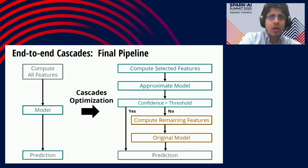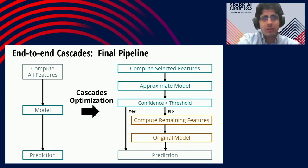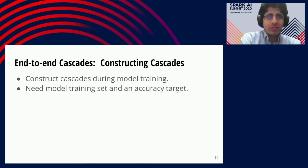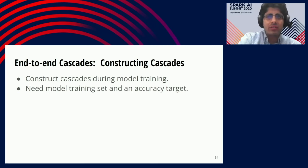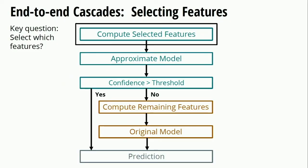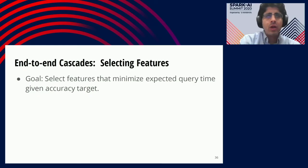Now let me talk about the more interesting and difficult aspect of Cascades: how we automatically construct them for any ML application whose performance bottleneck is feature computation. Willump automatically constructs Cascades ahead of time during model training, from a model's training set and an accuracy target. The most important question is which features to select for use in the approximate model — what are our high-value, low-cost features? We want to select features that minimize expected query time given an accuracy target.